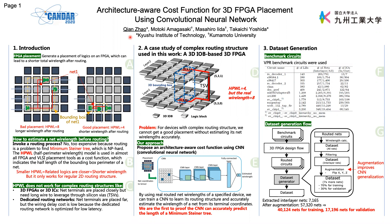Hello everyone, I'm Qian Zhao from Kyushu Institute of Technology. In this video, I will give a brief introduction about our work published at ICCAD 2020. The title of my presentation is Architecture-Aware Cost Function for 3D FPGA Placement Using Convolutional Neural Network.